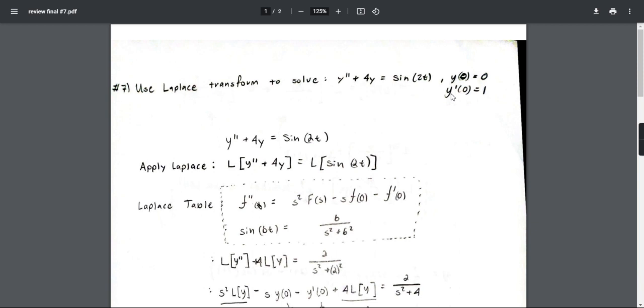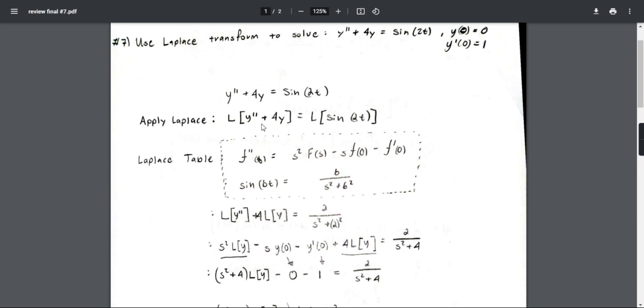So first, I apply Laplace to both sides, as you can see here. Now I'm going to use a Laplace table to specifically transform these equations. But before that, I have to talk about 4y, which I just take out the 4 because it is a constant, and I'm going to leave it as is.